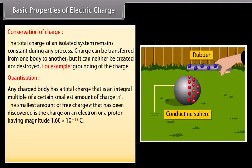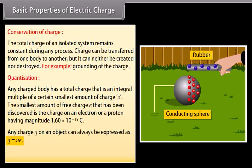The smallest amount of free charge e that has been discovered is the charge on an electron or a proton, having magnitude 1.60 × 10⁻¹⁹ coulomb. Any charge q on an object can always be expressed as q = ne, where n is an integer.